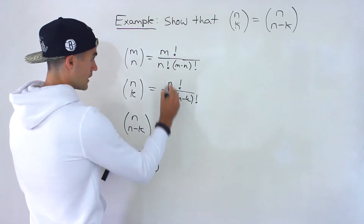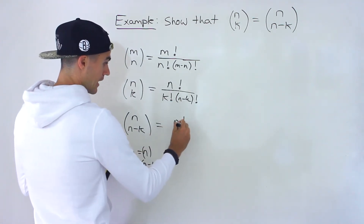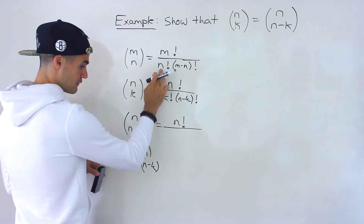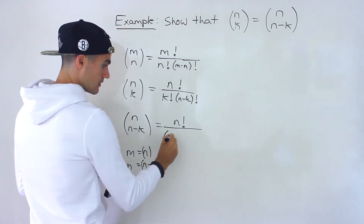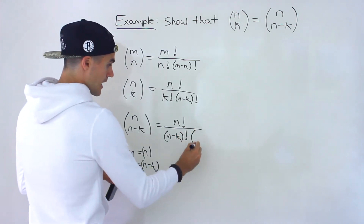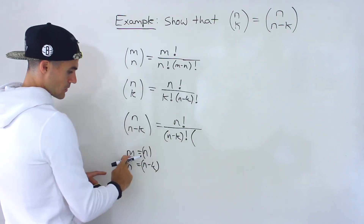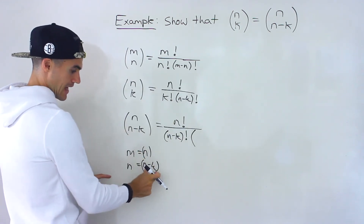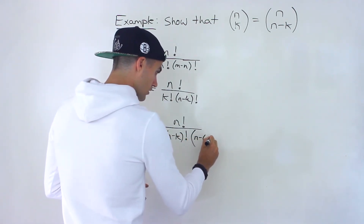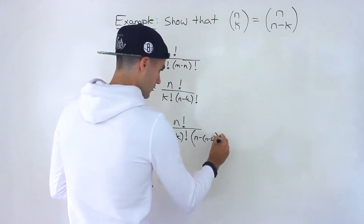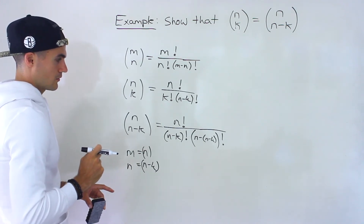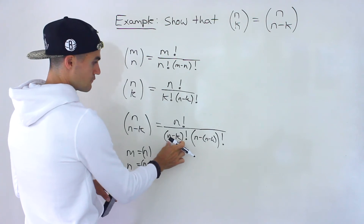So we're going to plug in both of these expressions for m and n respectively in the formula. We end up with m factorial, which is n factorial, over n factorial which is n minus k factorial. And then notice we're going to have n minus n, so m minus n is like n minus (n minus k). You have to put n minus k in brackets — you've got to be careful here. So we have n factorial over n minus k factorial.